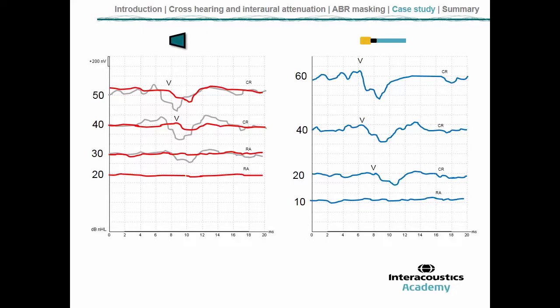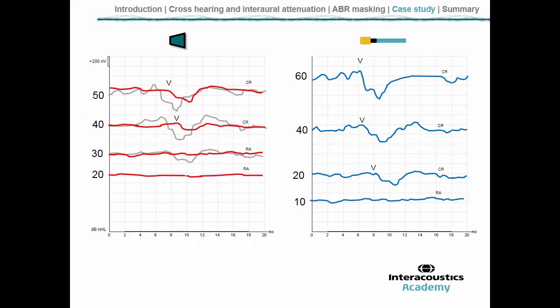At 40 dB nHL with masking, we now see a response — the previously grayed-out response was dominated by the left ear, but now with the left ear eliminated, the true threshold of the right ear is revealed at 40 dB nHL. Similarly at 50 dB, the genuine response from the right ear is small but present, slightly earlier in latency and larger in amplitude than before. We've now eliminated the contamination of the left ear on the right ear responses, and we can be clearly sure that the response originates only from the right ear.